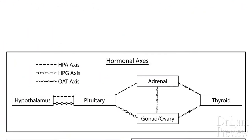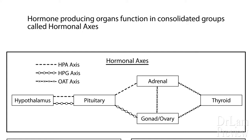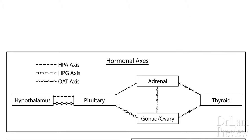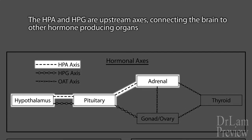The body's hormonal modulation is controlled by different axes. Axes are simply a way for us to group the function of hormones from various glands into one single unit, because they tend to behave as a consolidated item. There are upstream axes, which includes the HPA axis — the hypothalamic pituitary adrenal axis — that modulates adrenal cortex function in terms of steroidal hormone synthesis.